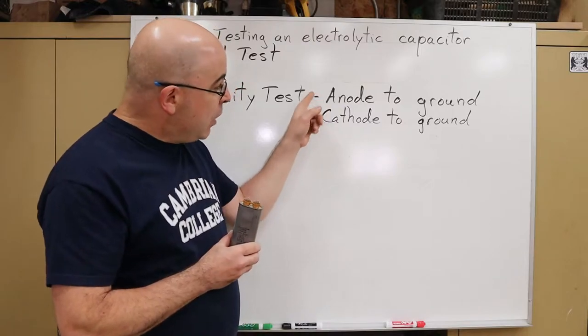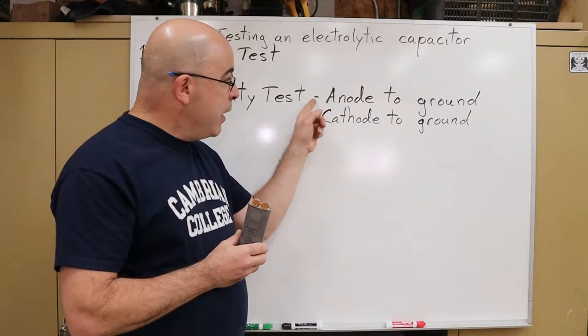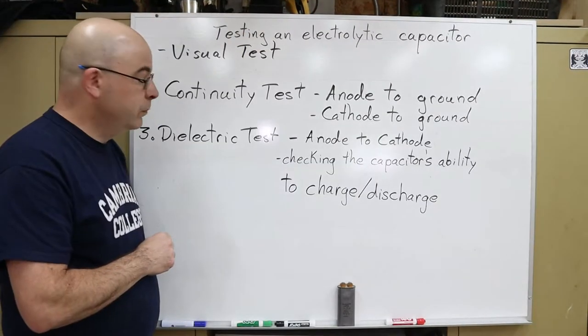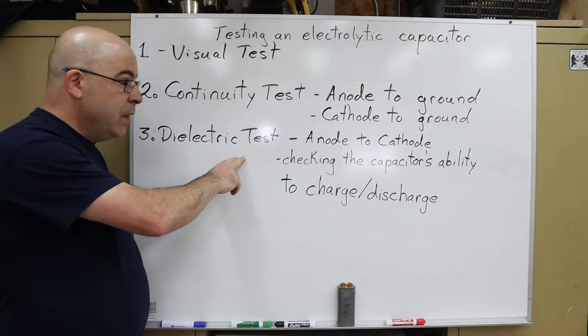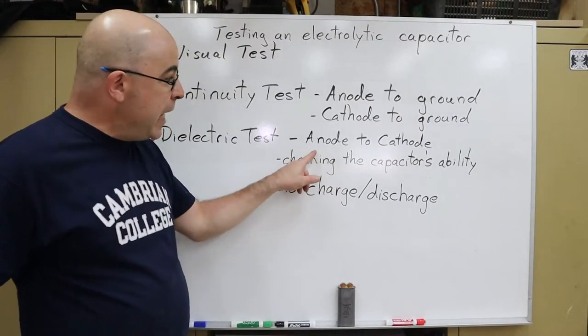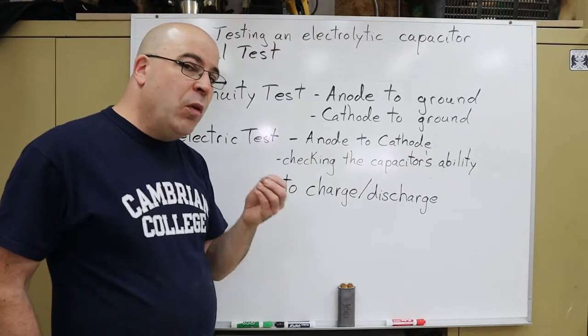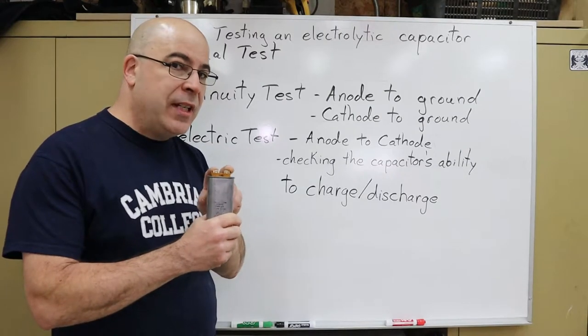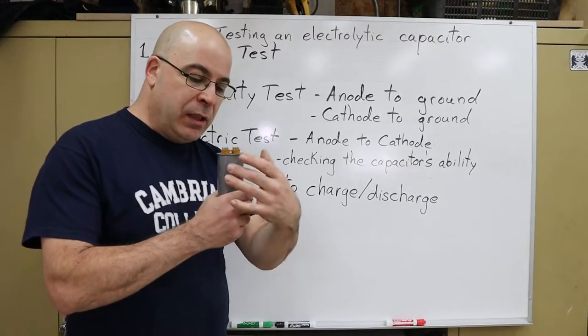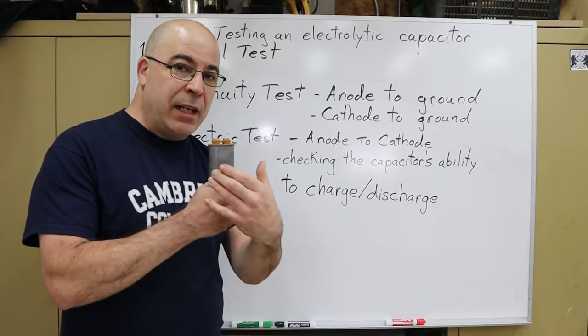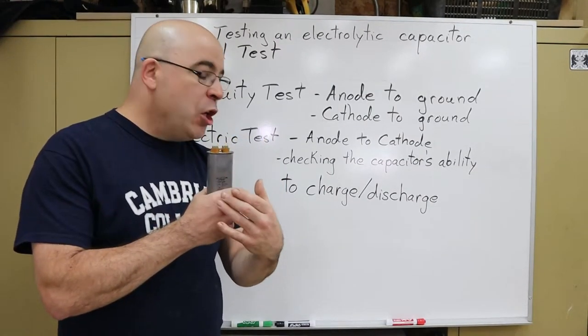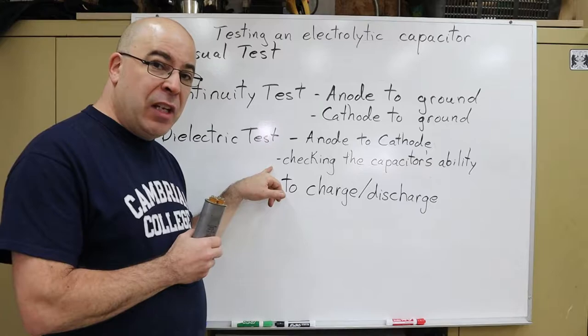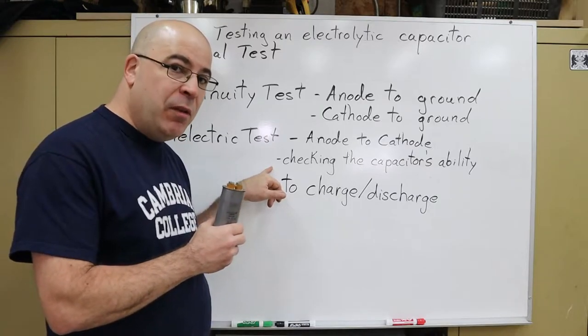Now you'll notice that I don't have another test listed anode to cathode. That's step three, the dielectric test. This is where we start testing the anode to the cathode. Here you're going to see continuity, not because the two plates are shorted together, but because of the fact that inside of here it sits within some dielectric fluid. Because of that you're going to see continuity. So I'm checking for the capacitor's ability to accept a charge and its ability to discharge.